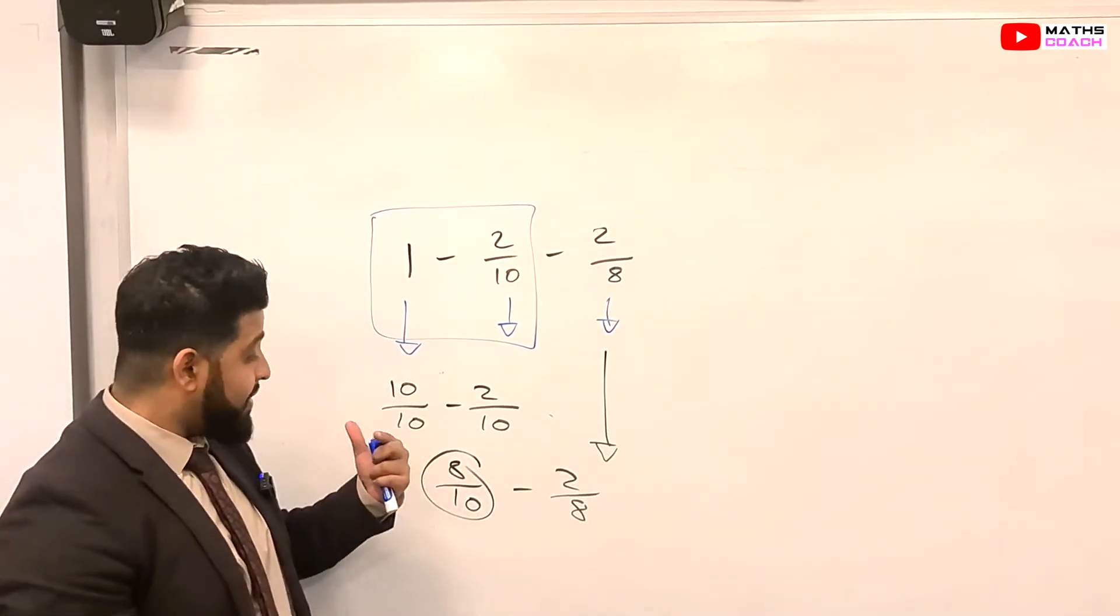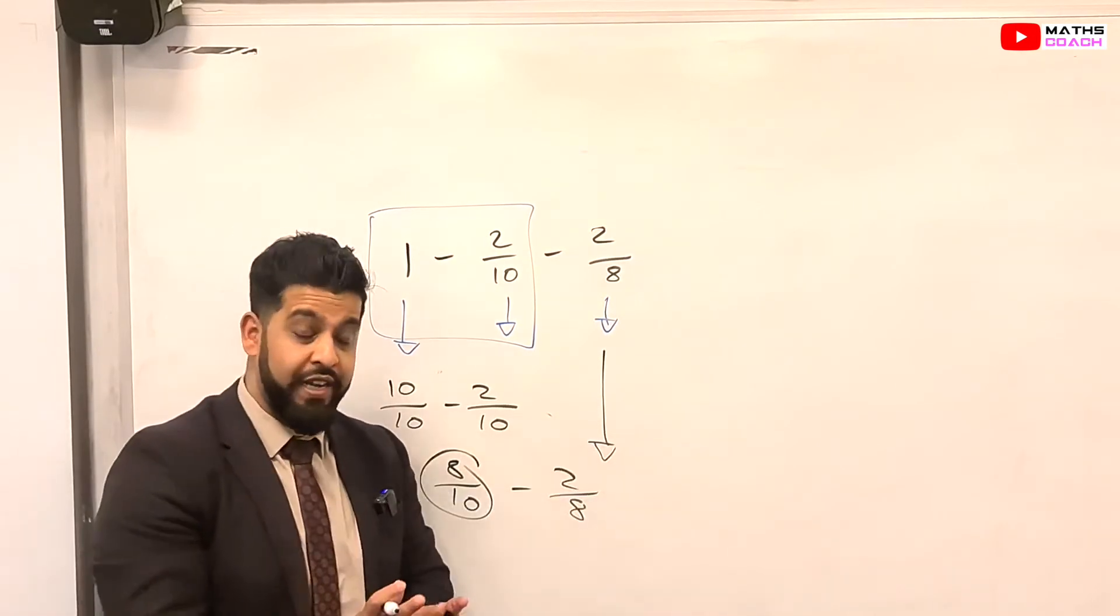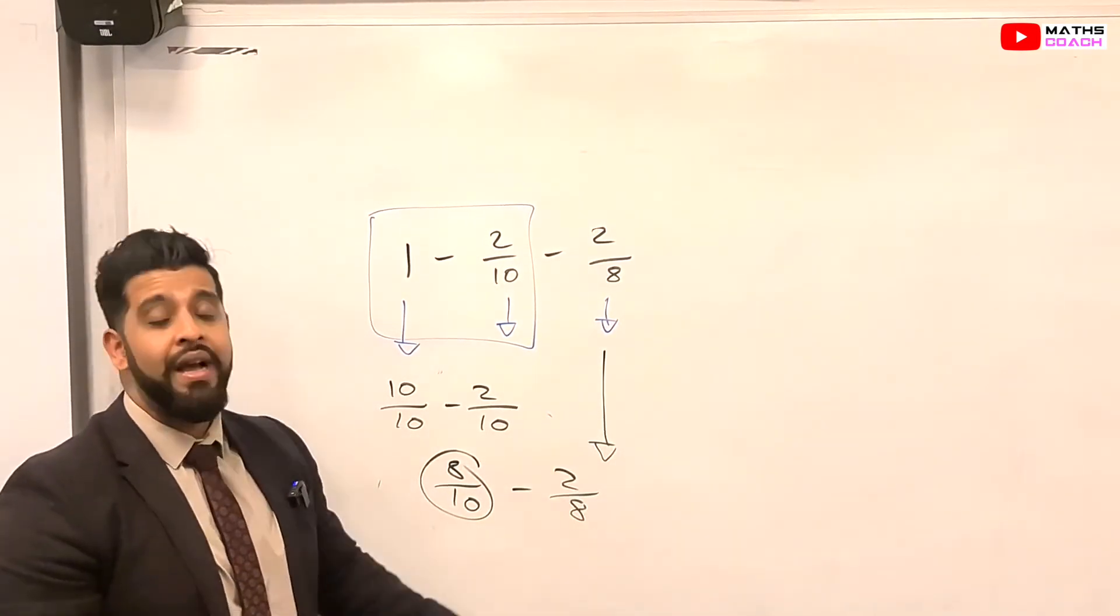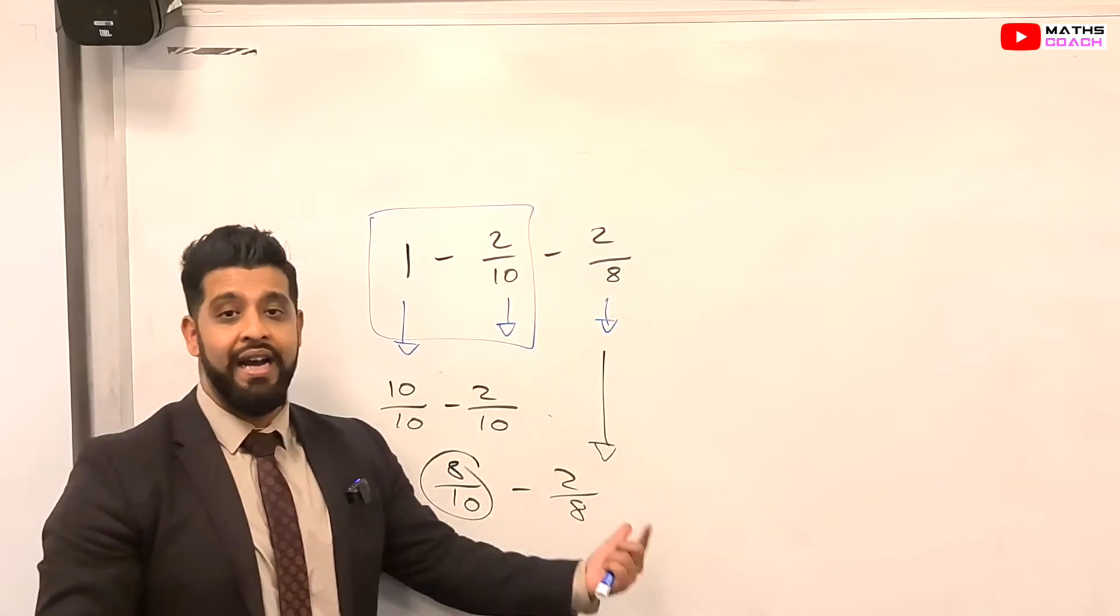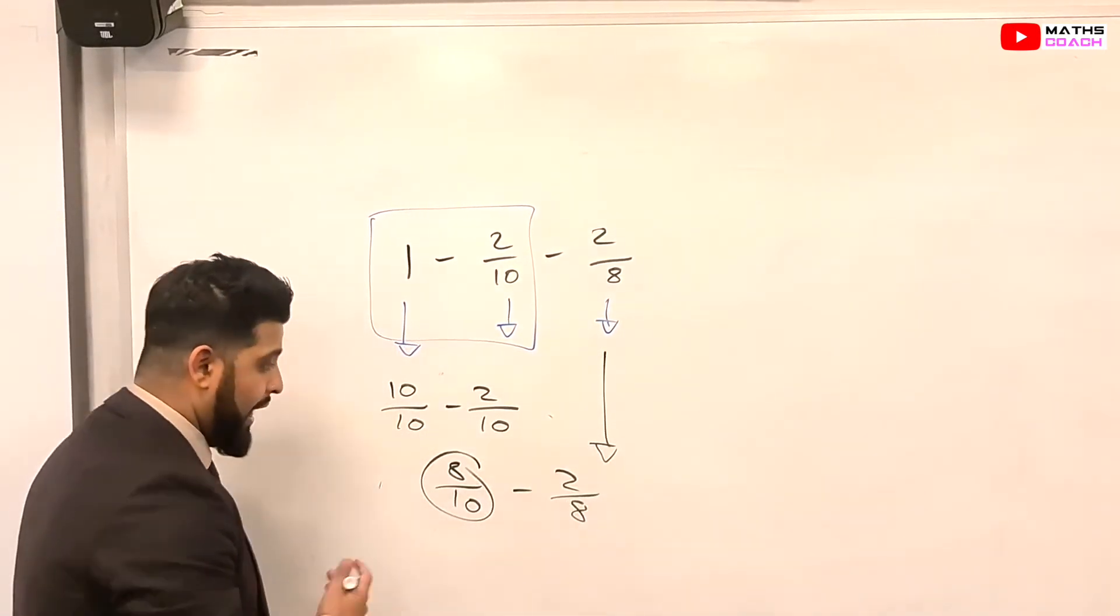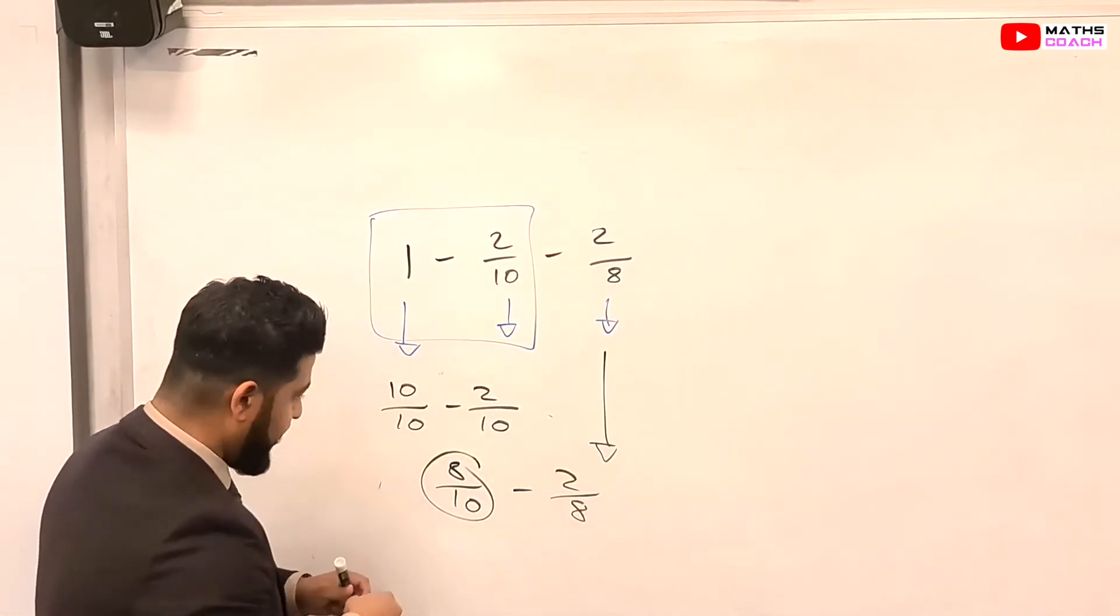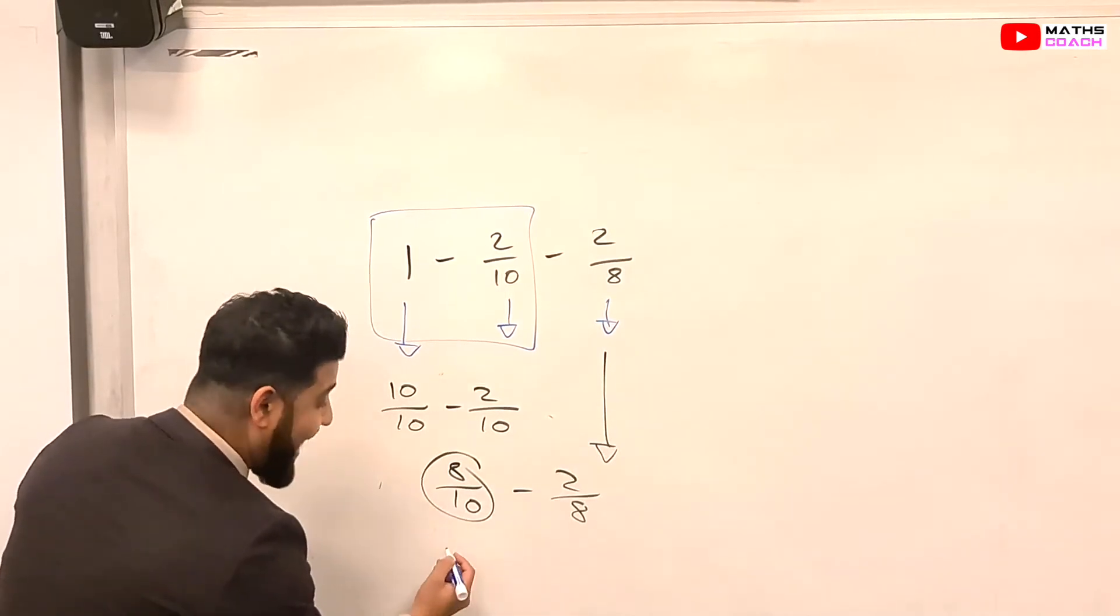You could either simplify, cancel down now. OK, and then you'll have no simplifying to do at the end. Or you can continue from here and then simplify at the end the final answer that you get. OK, so I'm just going to keep the answer as it is, like I said. So we want to have the same denominator. And it seems to be 80.